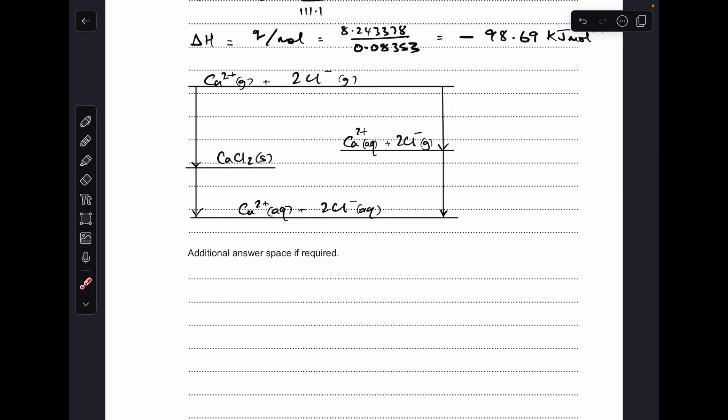So it comes out at minus, don't forget your sign, exothermic remember, so minus 98.69 kilojoules per mole. So now we've got that enthalpy change of solution, we can put the values into a cycle. I'll just quickly go through the cycle and then we'll put the numbers in. So we've got the lattice enthalpy for the calcium chloride, so that's going from the gaseous ions to the solid lattice. The enthalpy change of solution we've just calculated is this one here, so it goes down because it's exothermic, going from the solid lattice to the aqueous ions.